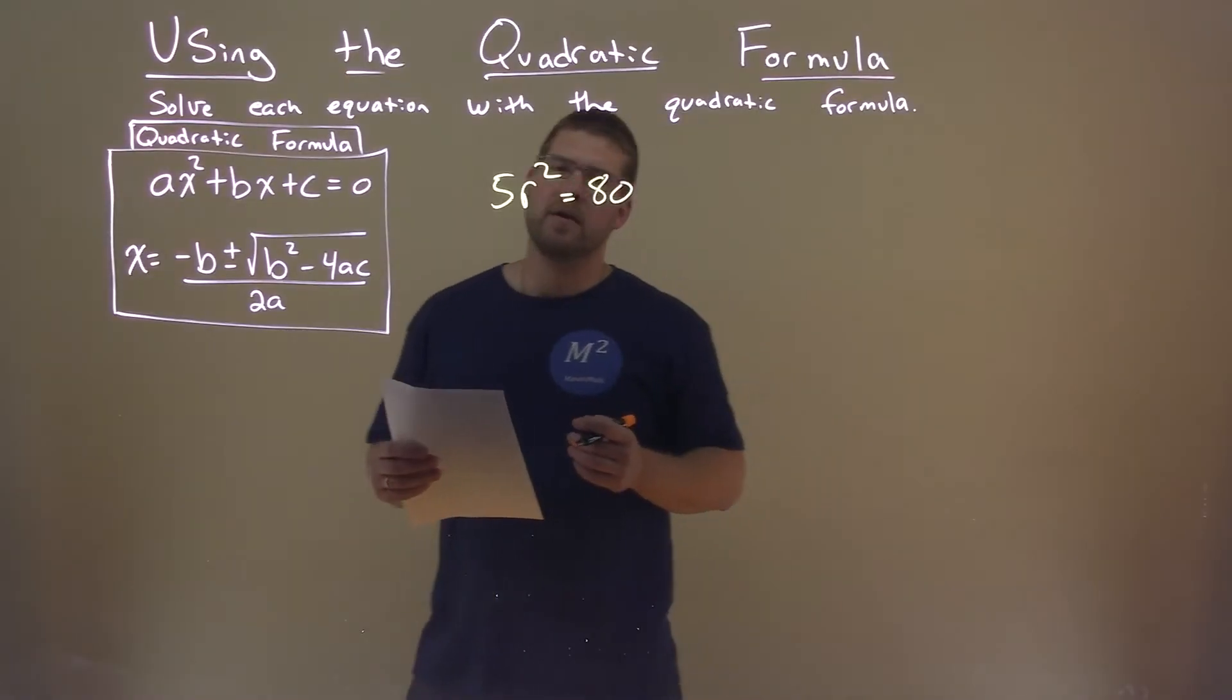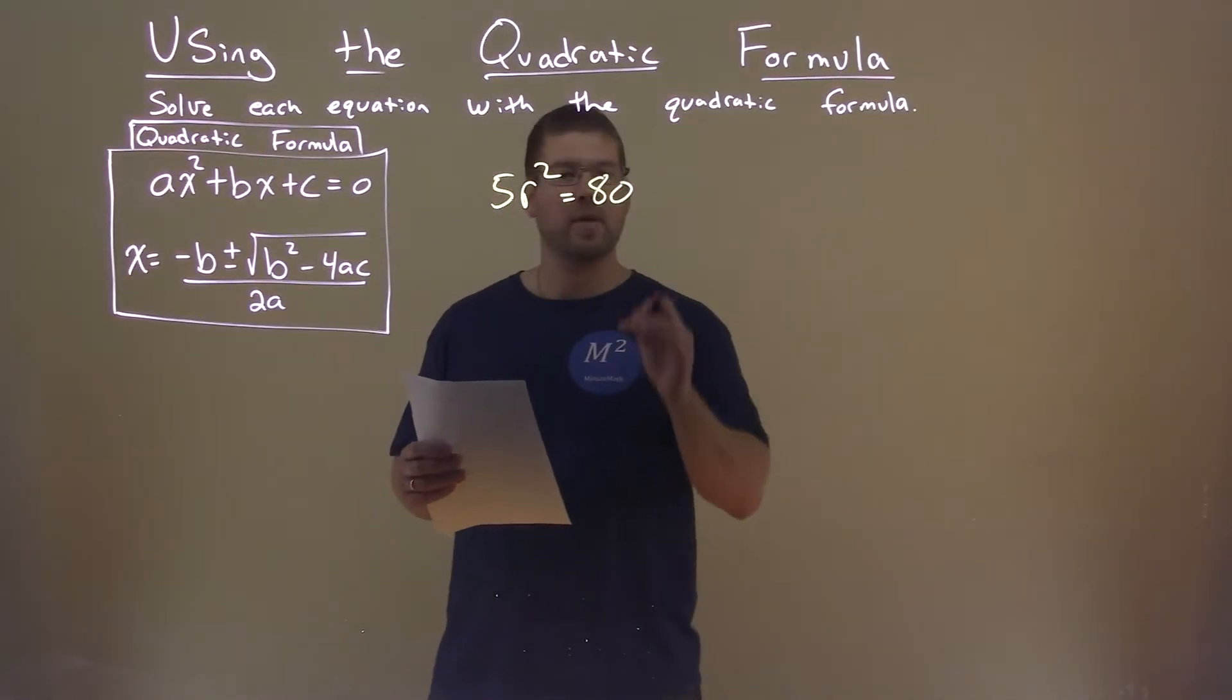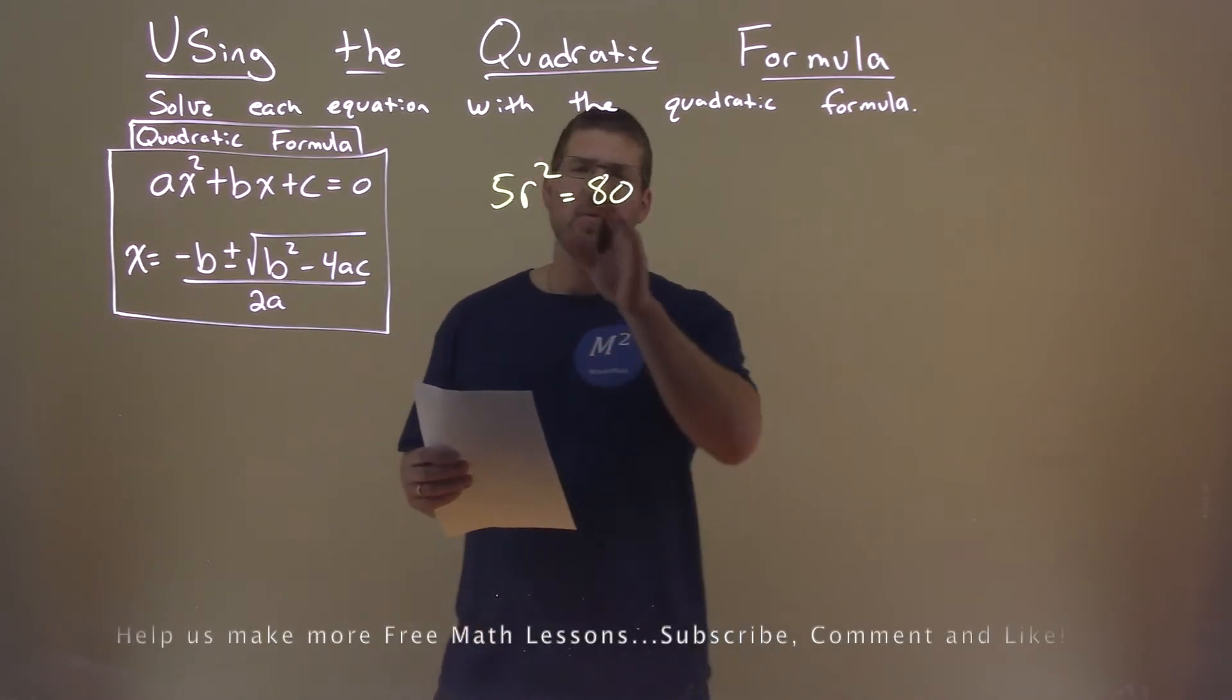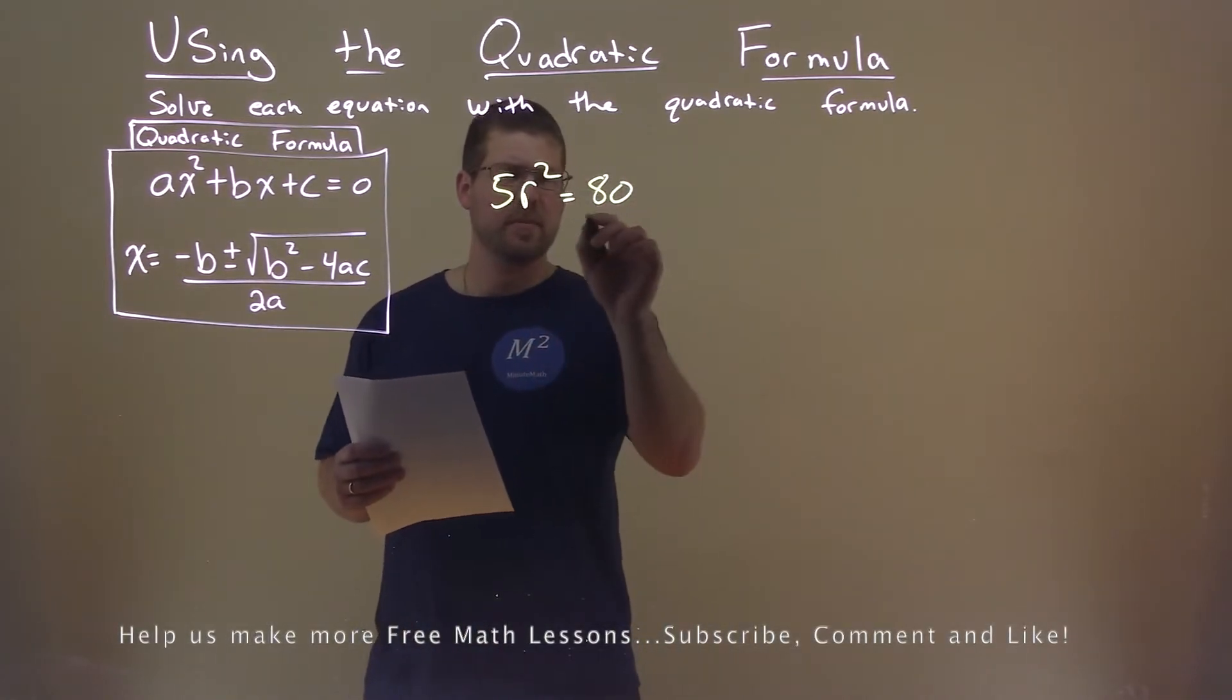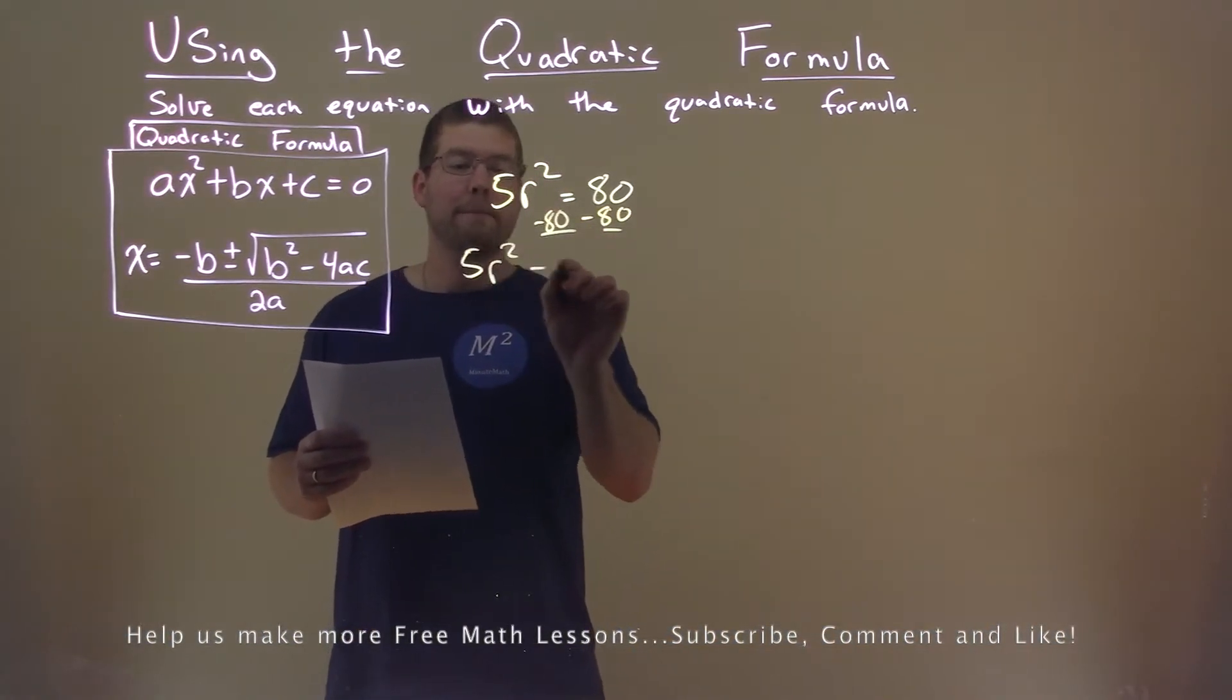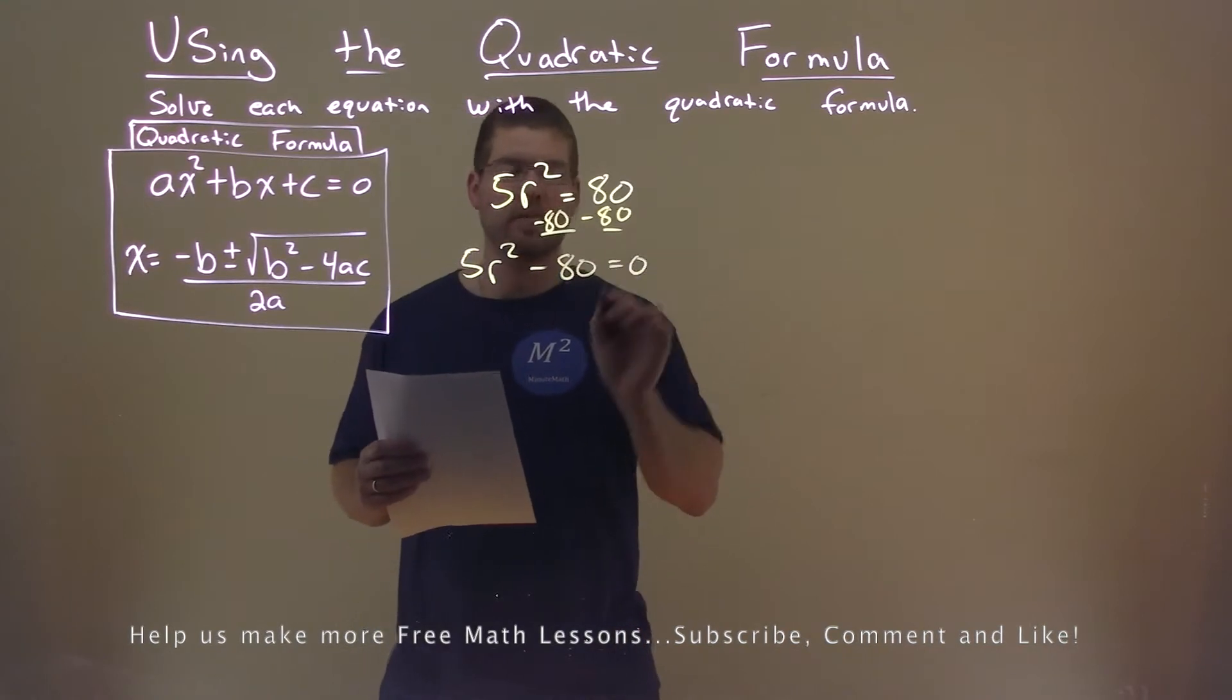We're given this problem right here. 5r squared equals 80, and we want to solve this using the quadratic formula. We have to have our equation equal to 0, so I'm going to subtract 80 from both sides here. 5r squared minus 80 equals 0.